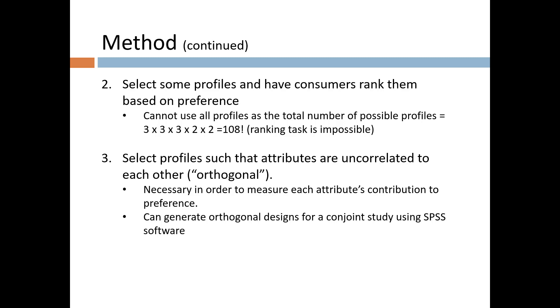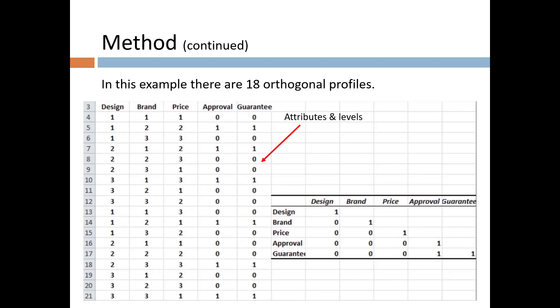All you have to do is indicate what the attributes are and how many levels each has. In this example, there are 18 orthogonal profiles as shown in this table. The table shows the specific level of each attribute, level 1, 2, or 3 in each profile. If you calculate correlation coefficients for all the attributes, you'll find a matrix that looks like this with zero correlation between the attributes. That is what is meant by an orthogonal design.